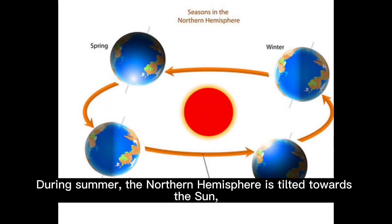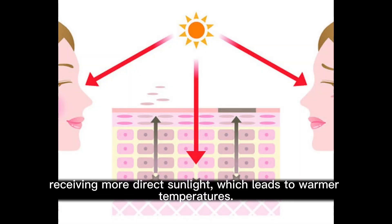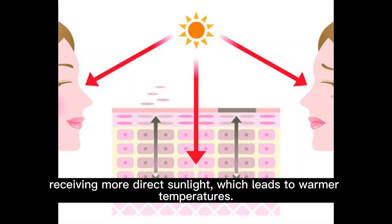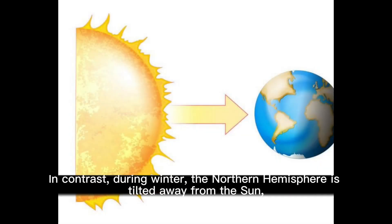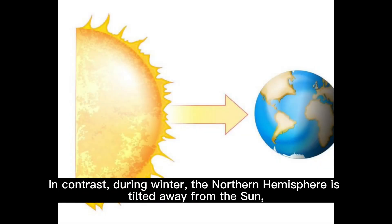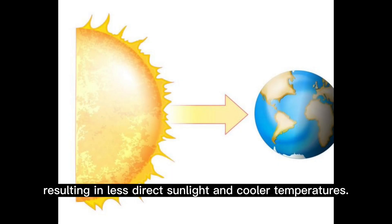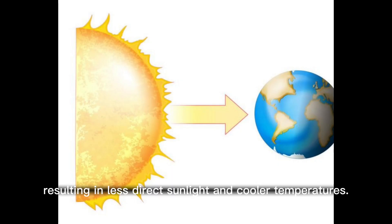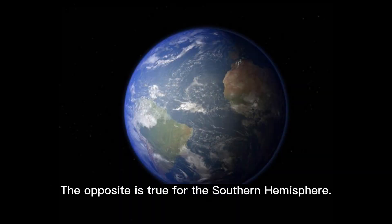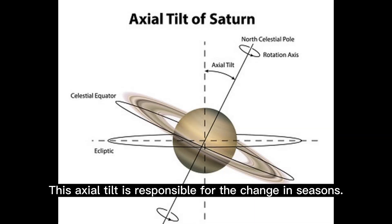During summer, the northern hemisphere is tilted towards the Sun, receiving more direct sunlight, which leads to warmer temperatures. In contrast, during winter, the northern hemisphere is tilted away from the Sun, resulting in less direct sunlight and cooler temperatures. The opposite is true for the southern hemisphere. This axial tilt is responsible for the change in seasons.